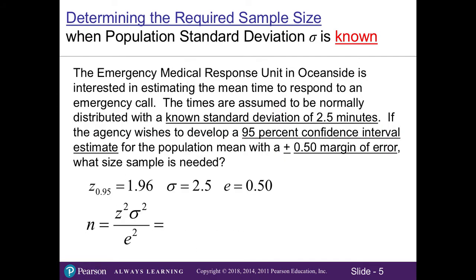Here's an example. The emergency medical response unit in Oceanside is interested in estimating the mean time to respond to an emergency call. The times are assumed to be normally distributed with a known standard deviation of two and a half minutes. The agency wishes to develop a 95% confidence interval estimate with a plus or minus 0.50 margin of error. What sample size is needed?